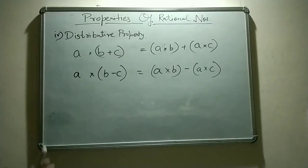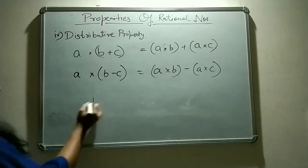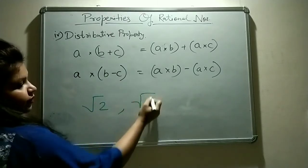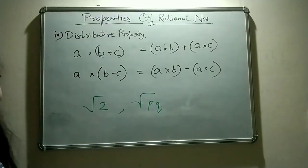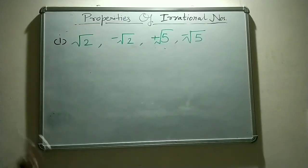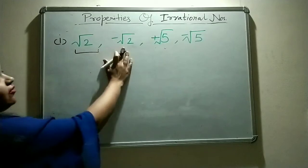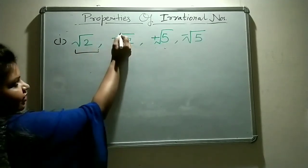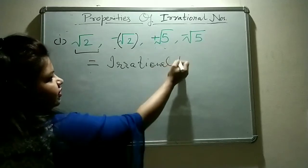Now let's move towards the properties of irrational numbers. Irrational numbers are numbers in the form of square roots, like √2. The foremost property of an irrational number is that the negative of an irrational number is also an irrational number. For example, √2 is irrational, so −√2 is also irrational.